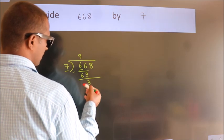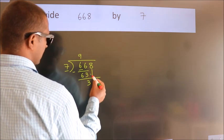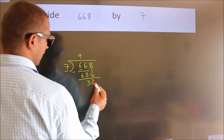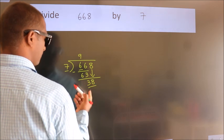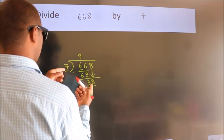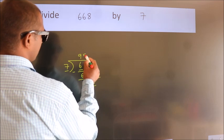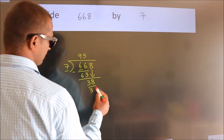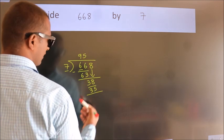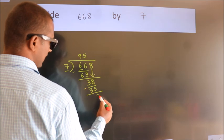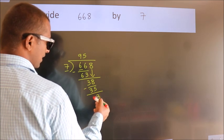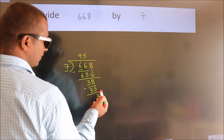After this, bring down the upside number, so 8 down, so 38. A number close to 38 in the 7 table is 7 fives, 35. Now we subtract, we get 3. After this, no more numbers to bring down.